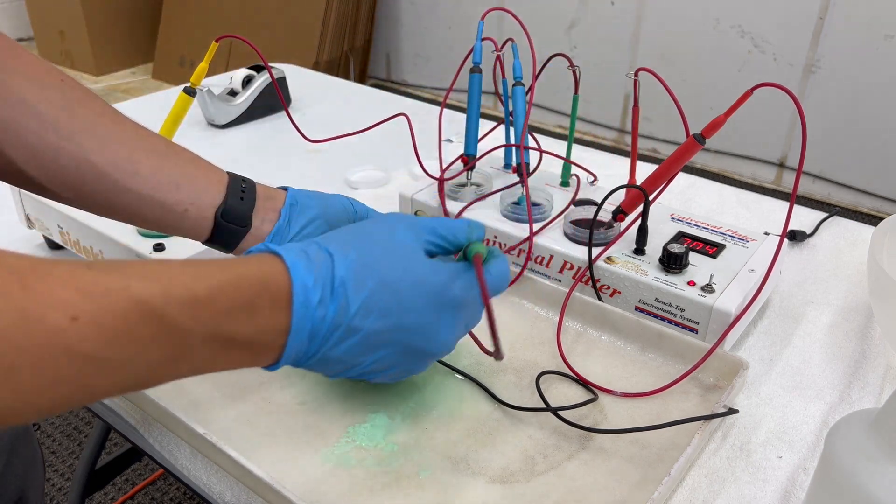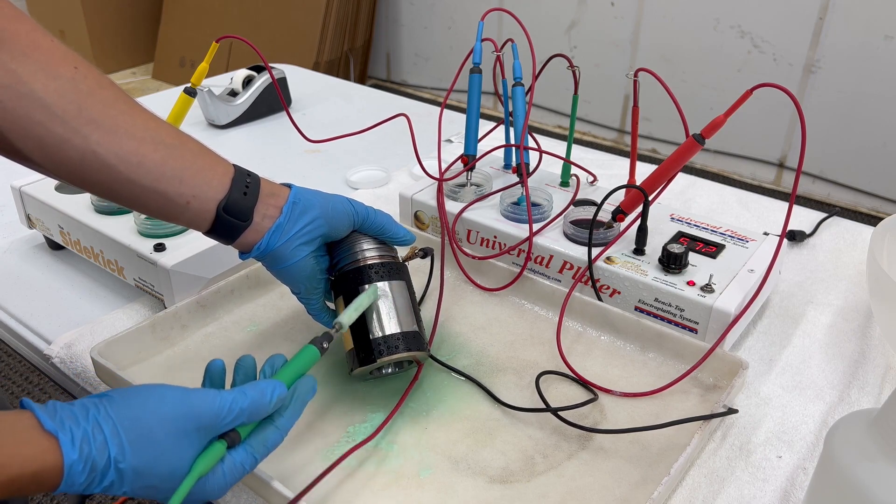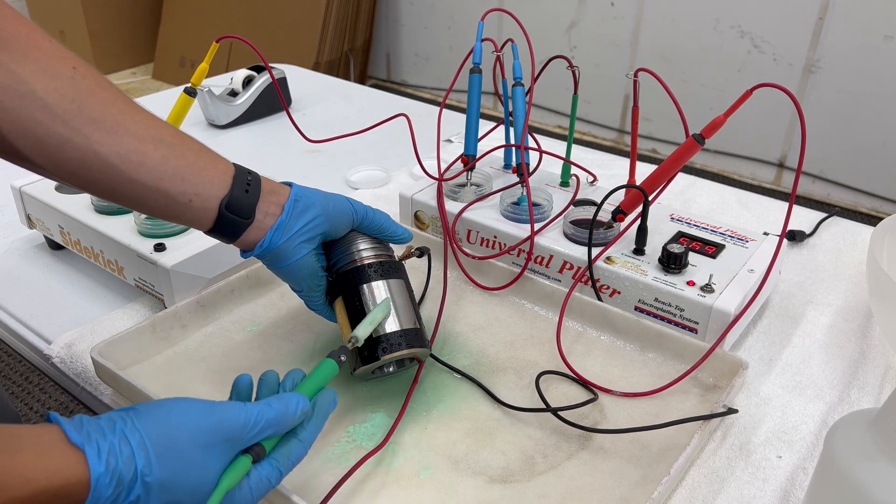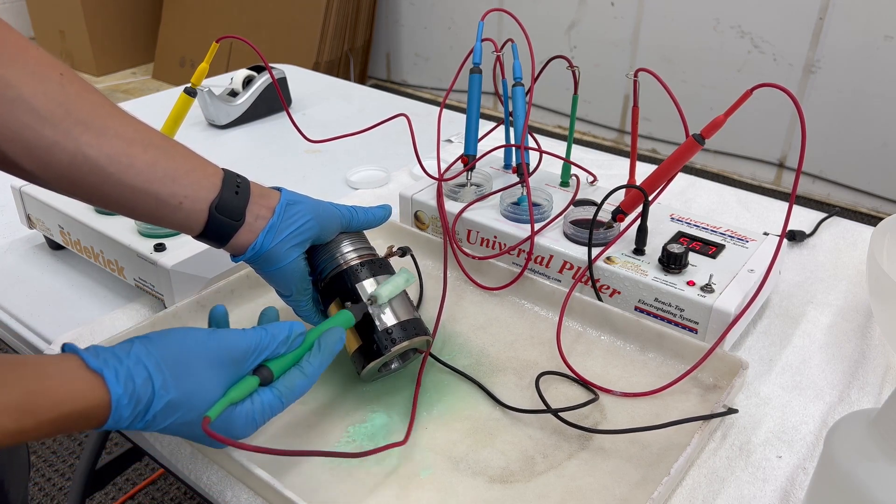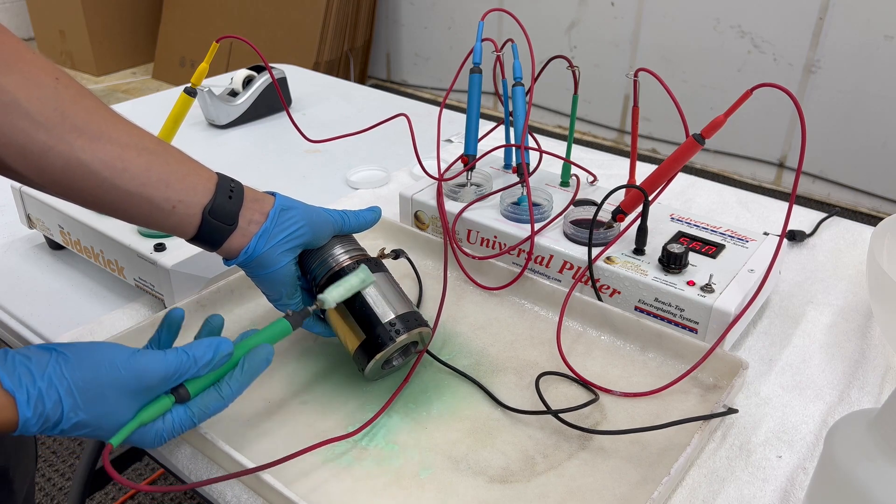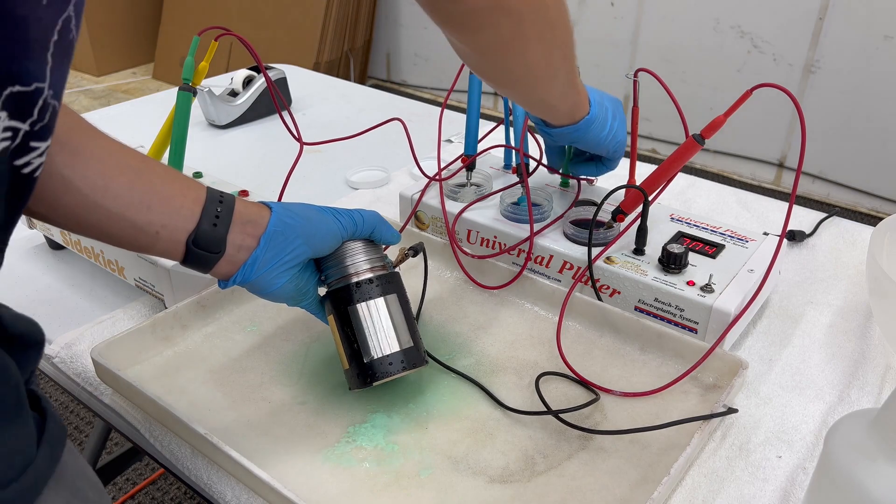Now the next step I'm going to do is get our woods nickel and I'm going to keep it at the same voltage as the electro clean, just seven volts. You can see it's working because it's bubbling and we're just going to go over this really quickly and not overdo it.